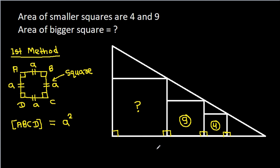Now suppose this point is A, this point is B, this point is C, this point is D, this point is E, this point is F, and this point is G.